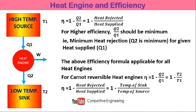For example, consider a steam turbine. From the boiler, high enthalpy, high energy steam enters the heat engine — that is Q1 entering the heat engine. The turbine blades expand the steam and produce net mechanical work output. After expansion, the steam is rejected carrying Q2 amount of energy. These are the concepts related to the efficiency of a heat engine.